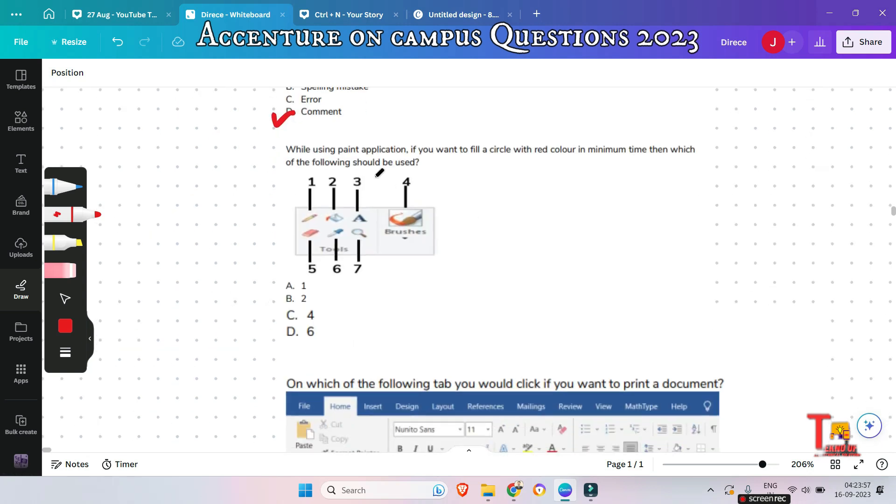Okay, the next question is, while using paint application, if you want to fill a circle with red color in minimum time, then which of the following should be used? 1, 2, 3, 4, 5, 6, or 7? Okay, let me answer that. Fill will be correct answer. This will help you to fill the circle in minimum time.